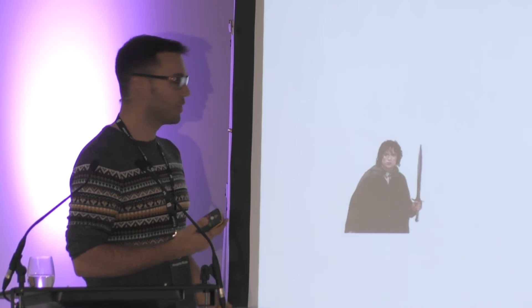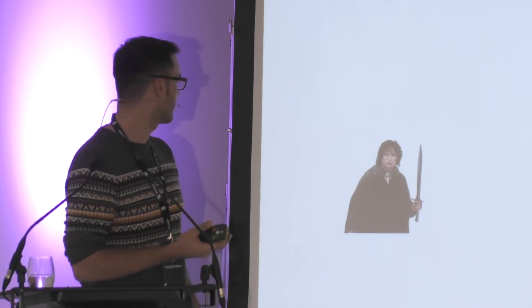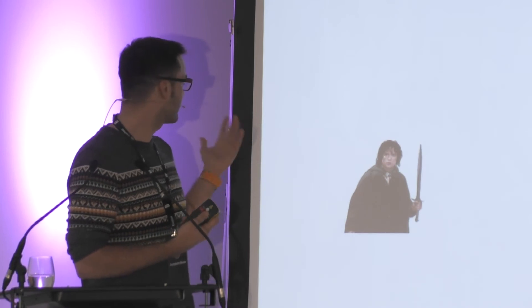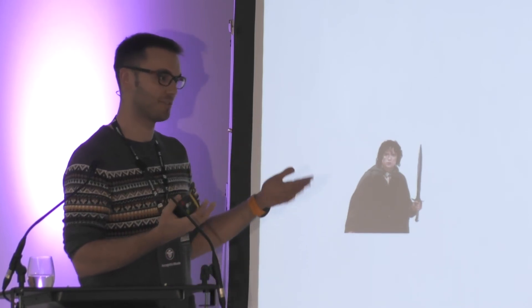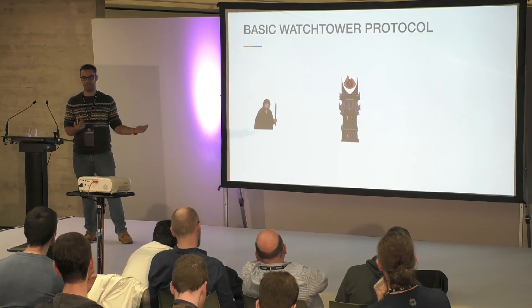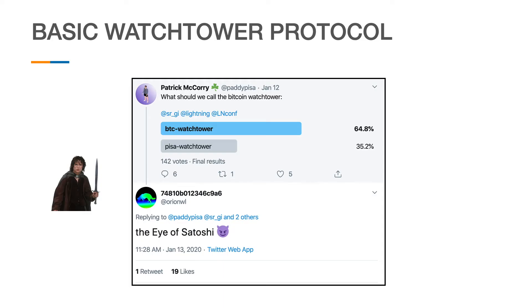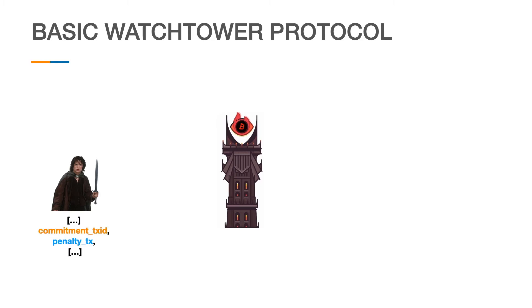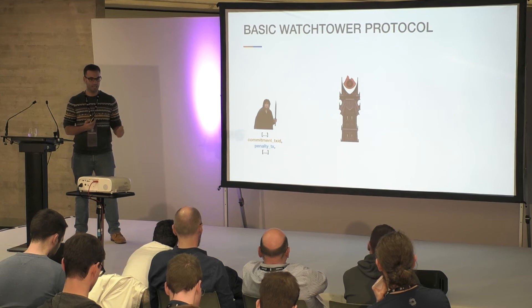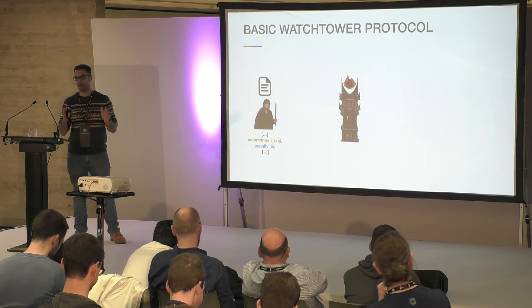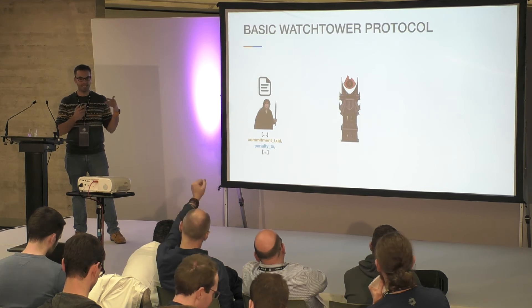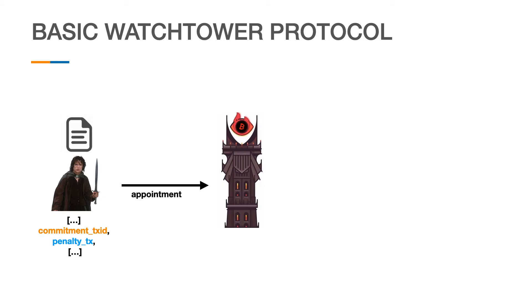So how should a basic watch tower protocol work? It's super straightforward. We're going to have our user, which is Frodo in this case — we know he's not the nicest person if you've watched the film. We also have our watch tower, which is going to be the Eye of Satoshi — thank you to wumpus for the suggestion of the name, I think it's pretty amazing. So Frodo has some information about his channel: the commitment transaction ID and the penalty transaction. He processes that information and sends an appointment to the watch tower.